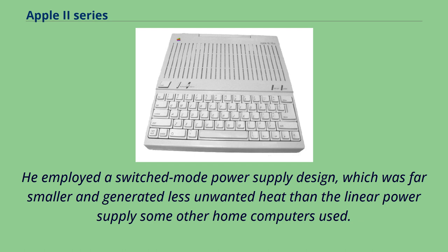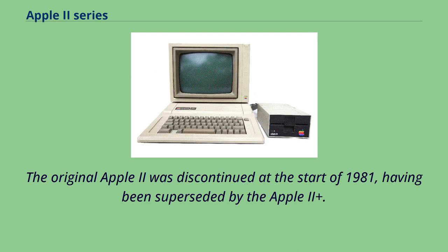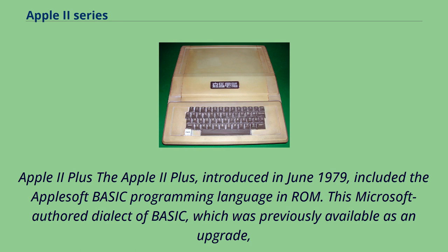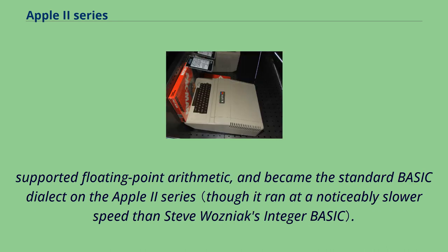The original Apple II was discontinued at the start of 1981, having been superseded by the Apple II Plus. By 1984, over 6 million machines had been sold. The Apple II Plus, introduced in June 1979, included AppleSoft BASIC in ROM. This Microsoft-authored dialect of BASIC, previously available as an upgrade, supported floating-point arithmetic and became the standard BASIC dialect on the Apple II series.